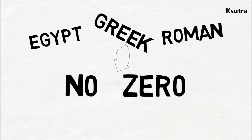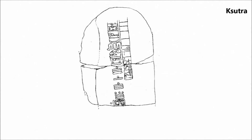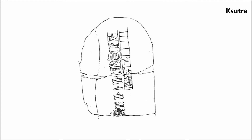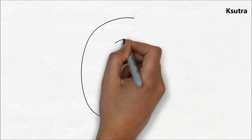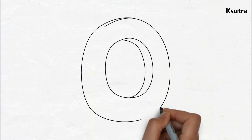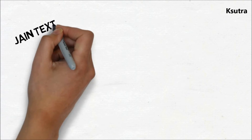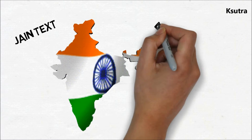By 130 AD, Ptolemy was using a symbol for zero. It was used alone, and hence was the first documented use of the number zero in the old world. The oldest known text to use zero is the Jain text from India entitled the Lokavibhaga, dated 458 AD.